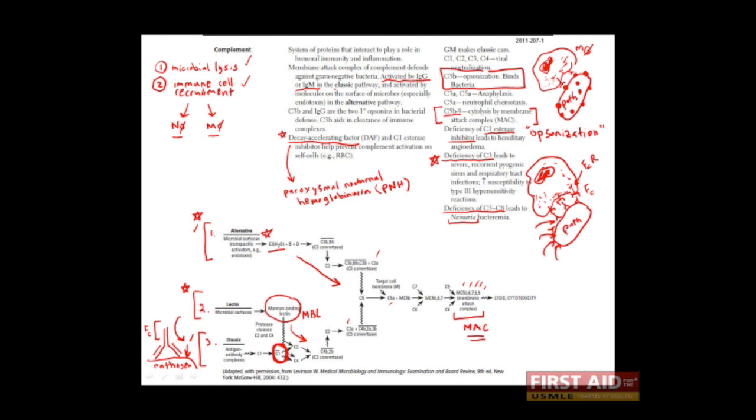So that was quite a bit, but hopefully the complement cascade makes much more sense now. In summary, remember that the two goals of the complement cascade are to cause microbial lysis and to recruit immune cells like neutrophils and macrophages to sites of infection. Once these immune cells are there, they can do their thing and begin phagocytosing pathogens. And this phagocytosis is enhanced by complement proteins themselves, in particular C3B. Finally, we know that complement can be activated in three ways: the alternative pathway, which is always on, the lectin pathway, and the classical pathway, which is dependent on the presence of antibodies.